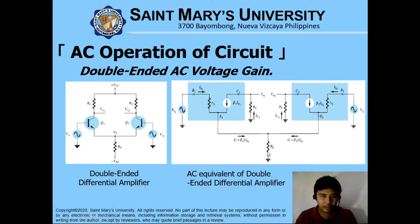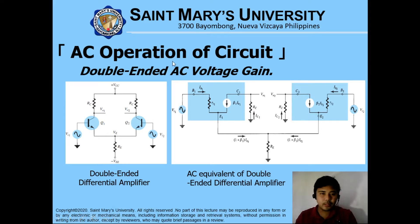Going down to this form, we have here RE. This expression — 1 plus beta times IB — is actually IE itself. So we have a different approach in double-ended AC voltage gain. As expected, IE now, this current, is equivalent to twice IE, or twice of (1 plus beta) multiplied by IB.